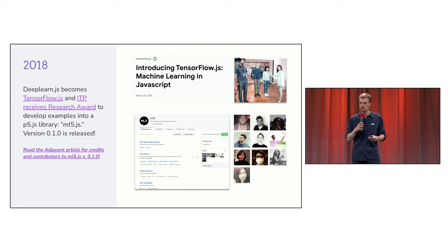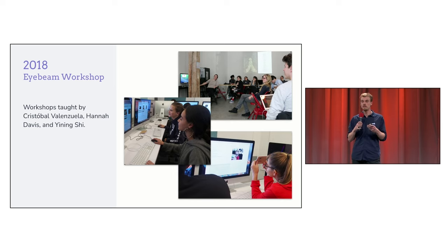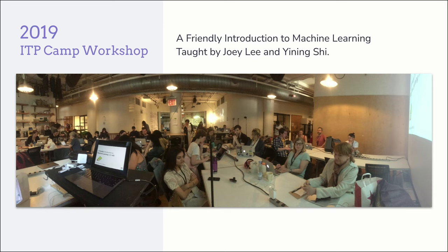Here you can see a GIF from PoseNet, a human pose detection model running in the browser. Throughout this process, ML5 has been taught alongside existing creative coding frameworks like P5.js. It's been taught in both graduate and undergraduate courses at several universities, at workshops in art spaces in New York, in Berlin and elsewhere, and even in primary and secondary school workshops — all because of a focus on providing an initial entry point to working with AI and machine learning as a creative platform.